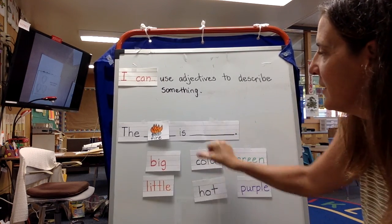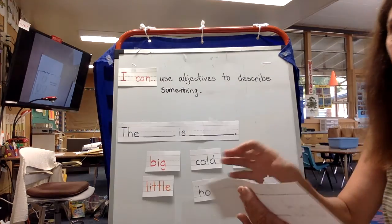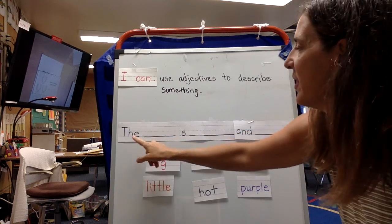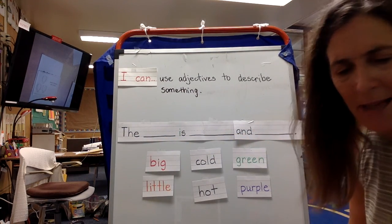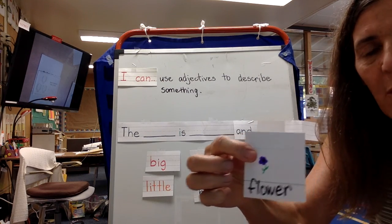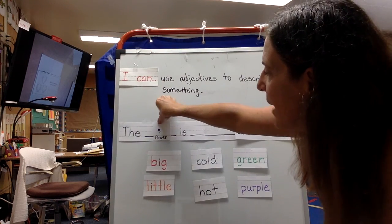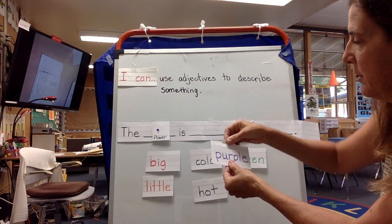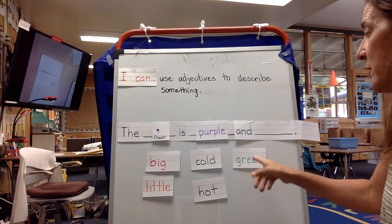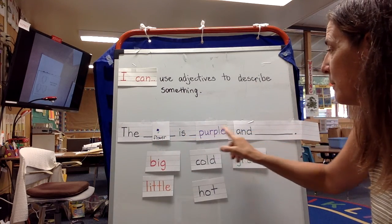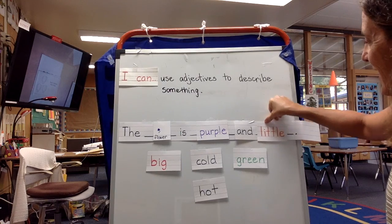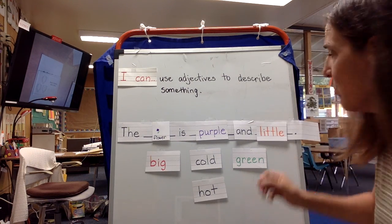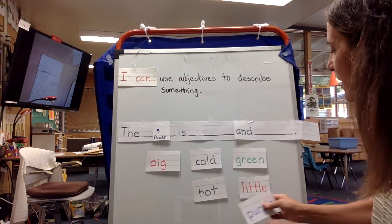Now you'll each get two turns with this sentence, but then we'll add on a new ending. This says: the blank is blank and blank. That's a lot of blanks — let me show you something. Here's a flower. See that flower? Watch how I can put two adjectives; I can describe it even more. The flower is purple and green. The flower is purple and little — it is! So you can come up with two descriptive words. If you want to think of your own description, that's fantastic.